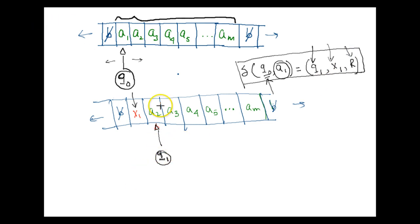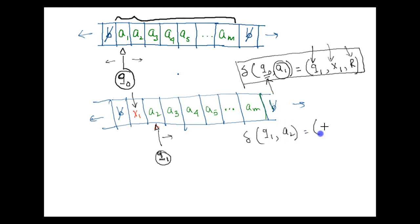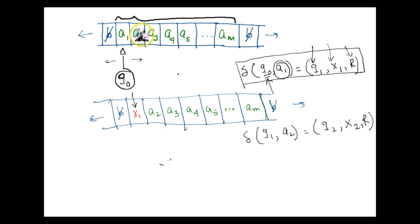If in state Q1 on reading A2 it goes to Q2 and moves right, then the delta rule is written as: δ(Q1, A2) → (Q2, X2, R). That means it rewrites the cell content from A2 to X2 and moves towards the right, changing the state to Q2.